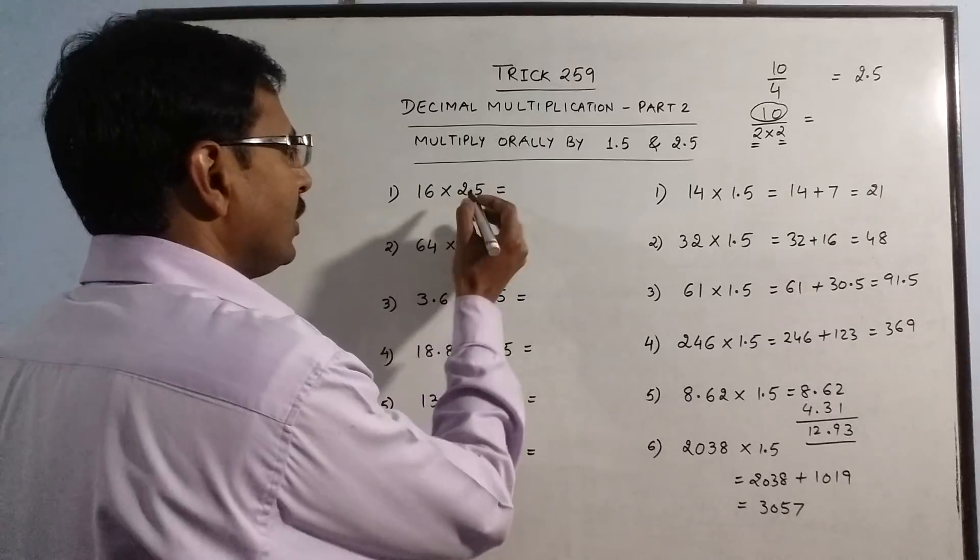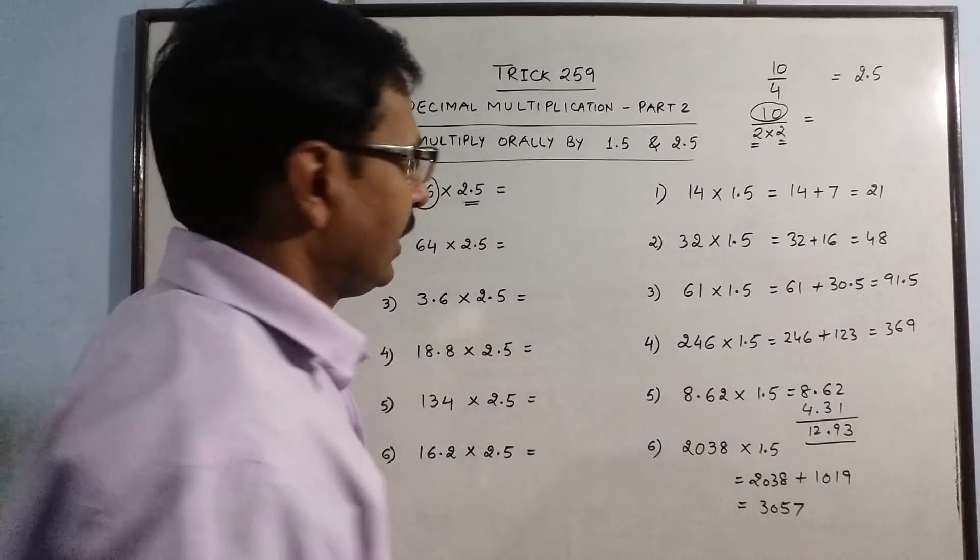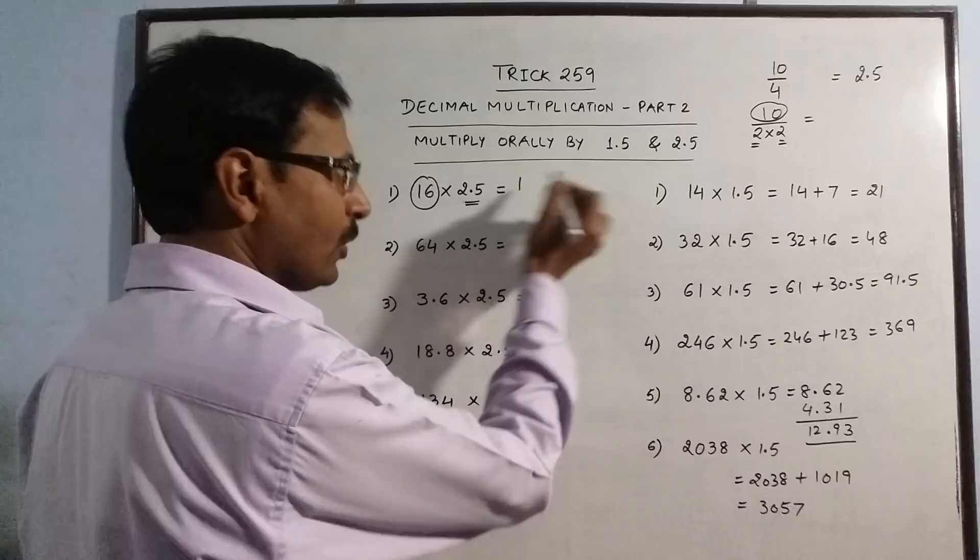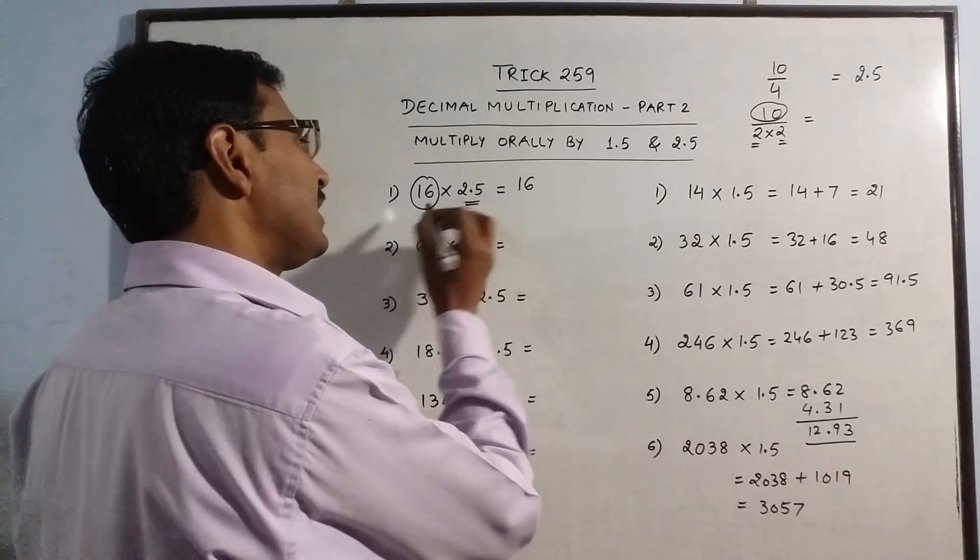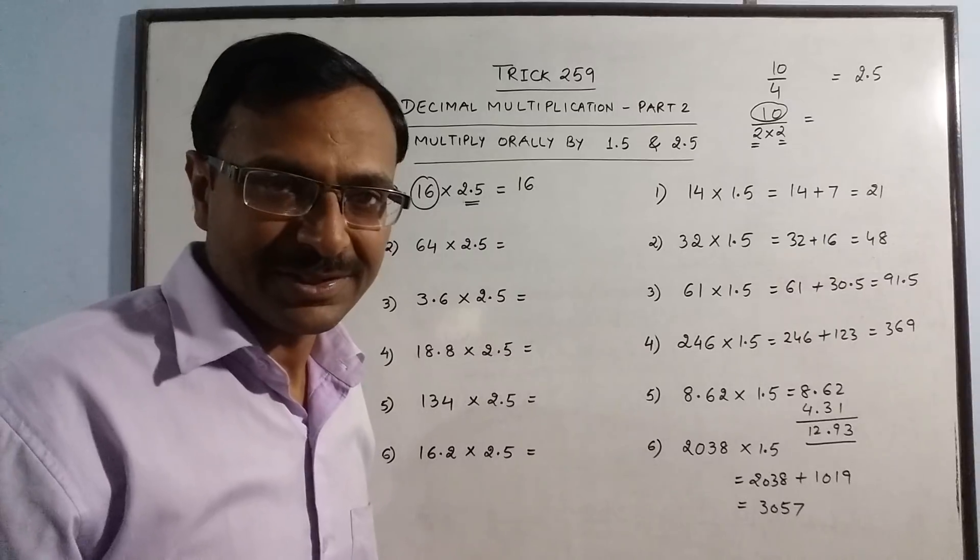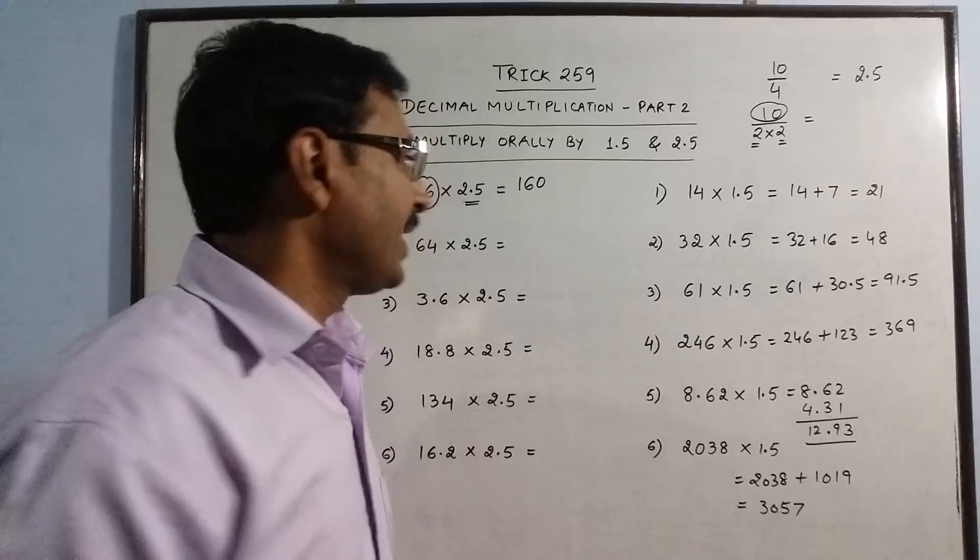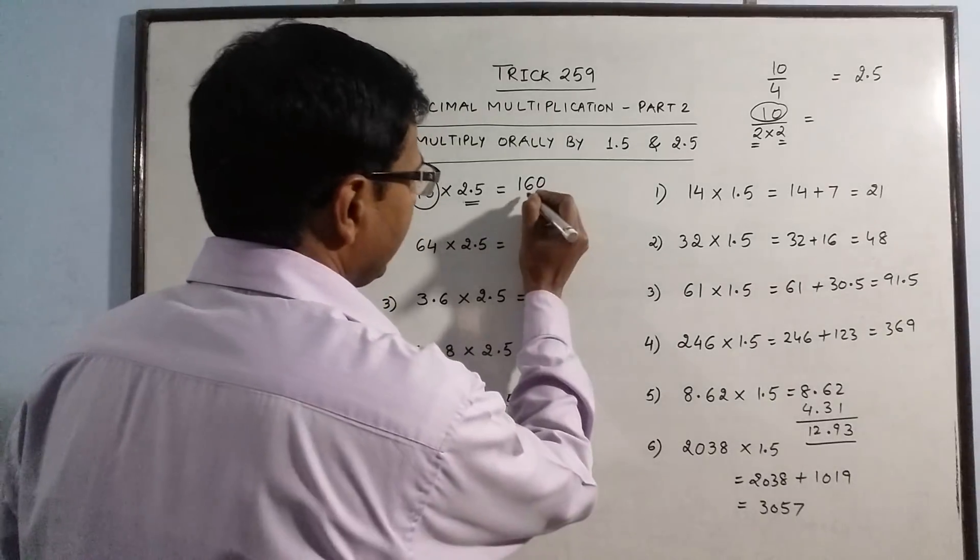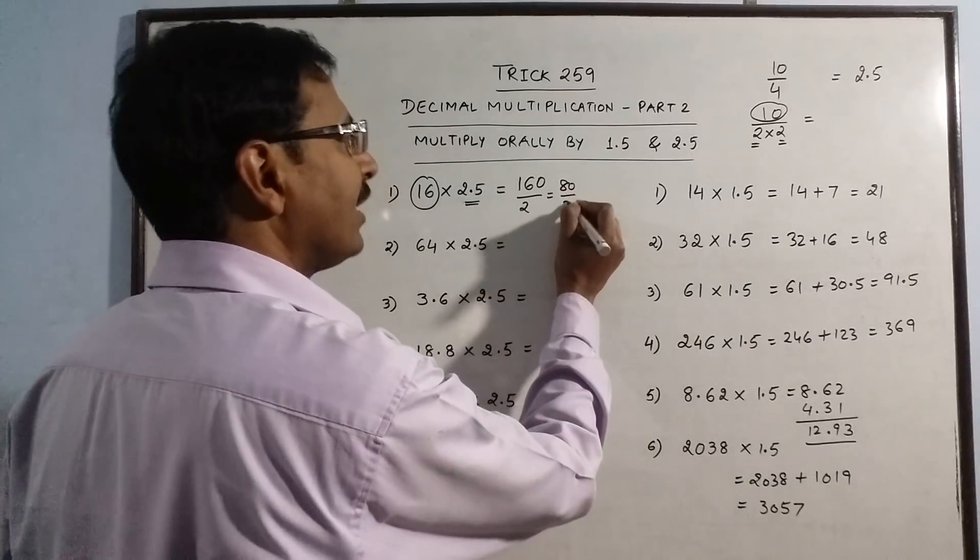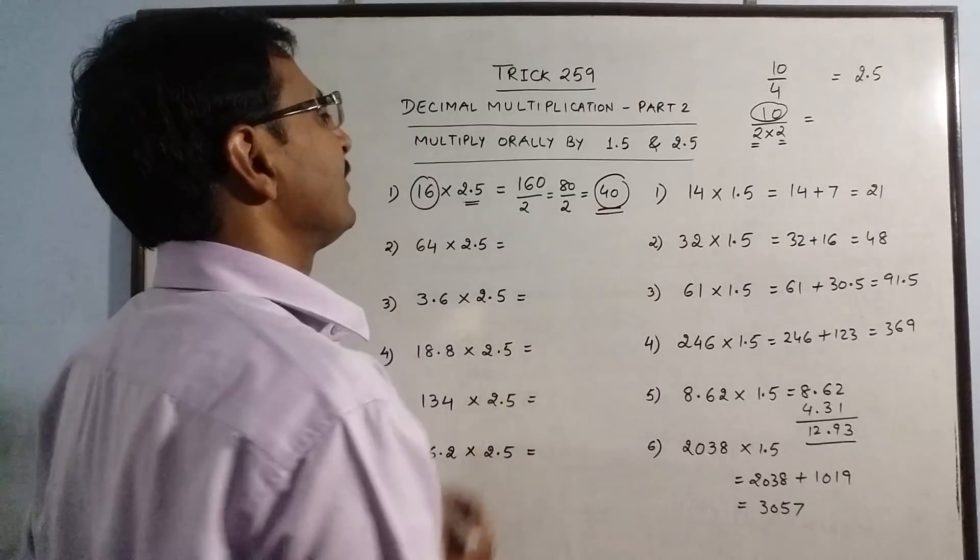Now when we apply it here, it will be very simple. We will not look at this number, we will look at only this number, 16. I am writing all the steps here. Just multiply this by 10. 16 multiplied by 10 is 160. Now take the half of this number, you get 80, and again take the half of this number, you get 40. This is the answer on multiplying 16 by 2.5.